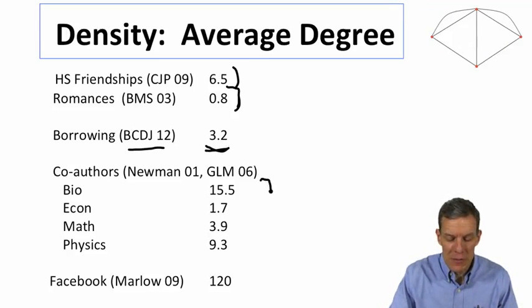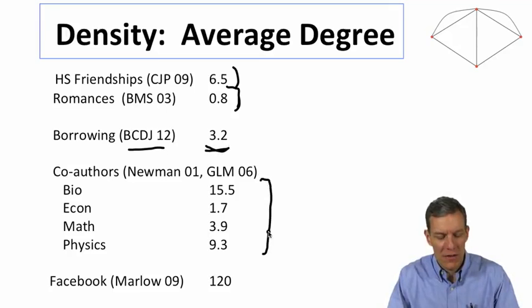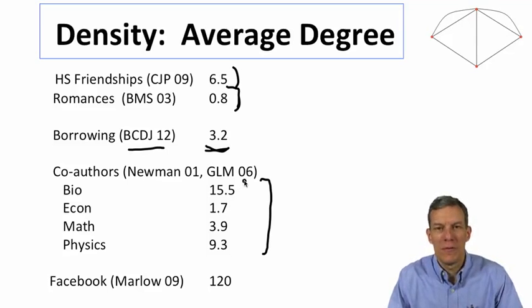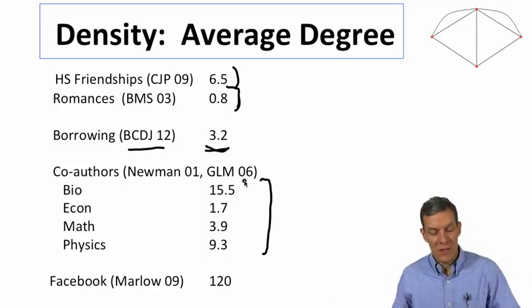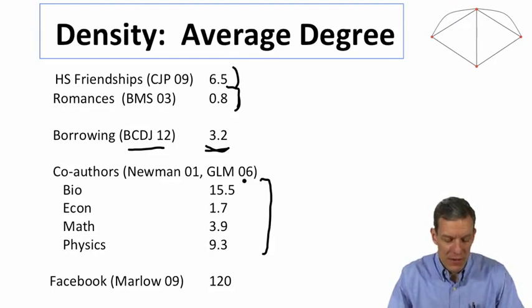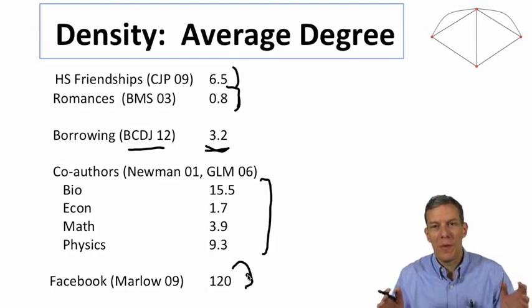Various co-authorship studies, depending on what you're looking at, economics, biology, math, physics. You see different numbers of co-authors that people typically have, say in a decade or some time period, varying from just under 2 to over 15.5 if people work in larger teams. So you see different numbers of co-authors. People always ask about Facebook. Facebook number, about 120.